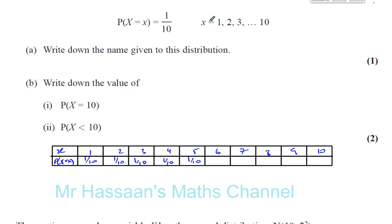That's what this means. When x is all the way from 1 to 10, the probability is 1 tenth for all of those. The probabilities have to add up to 1, and this does.